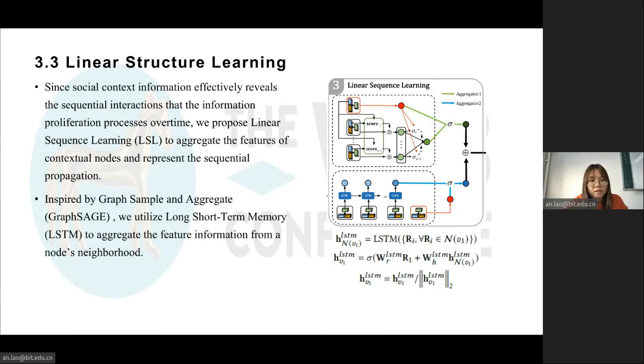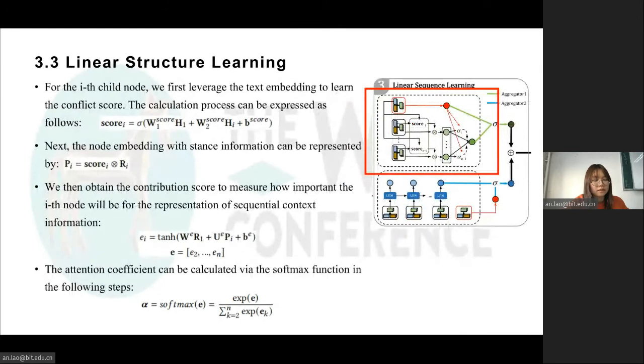Inspired by graph sample and aggregate, we utilize long short-term memory to aggregate the feature information from a node's neighborhood. However, the LSTM-based approach makes the default assumption that the contribution of the latest response is the largest, and this aggregator can only learn the engagement drift but cannot dynamically measure the importance of different response nodes. Consequently, we develop a stance attention aggregator to measure response nodes' importance according to the stance conflict between the root nodes and child nodes.